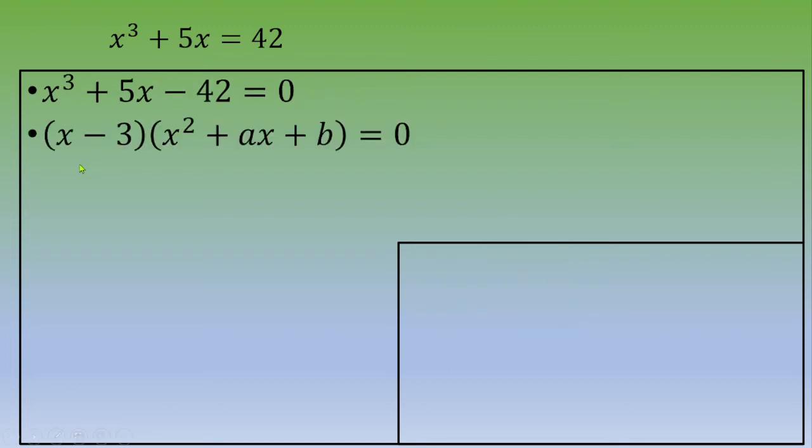We end up with x minus 3 times x squared plus ax plus b equals 0. We don't know the value of b and the value of a, but we know that if we expand, negative 3 times b equals negative 42. So now we end up with b equals 14.